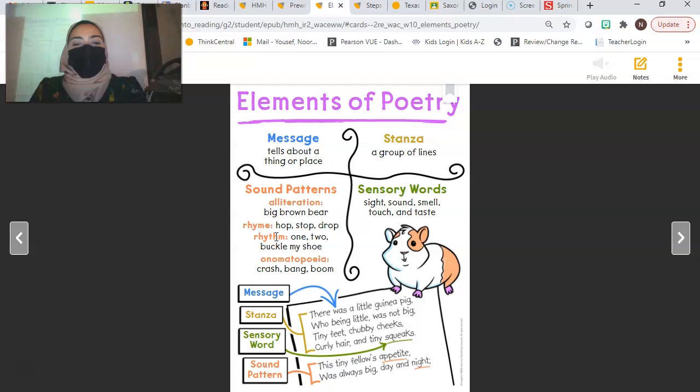So, poetry has these different sound patterns. It doesn't have to have all of them. It doesn't have to have alliteration, rhyme, rhythm, and onomatopoeia. But it has to have at least one, and the better the poem, the more it has. A poem also has sensory language, and this is what we've really been focusing on. Sensory language is language that uses your sight, or your sound, or your smell, or your touch, or your taste.